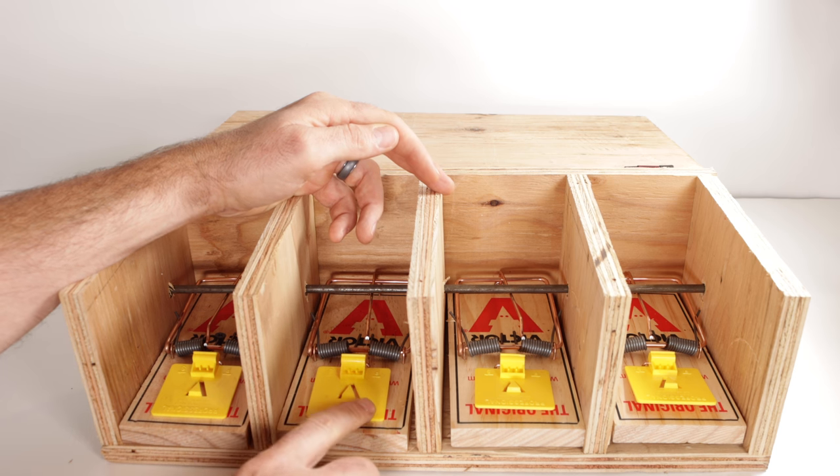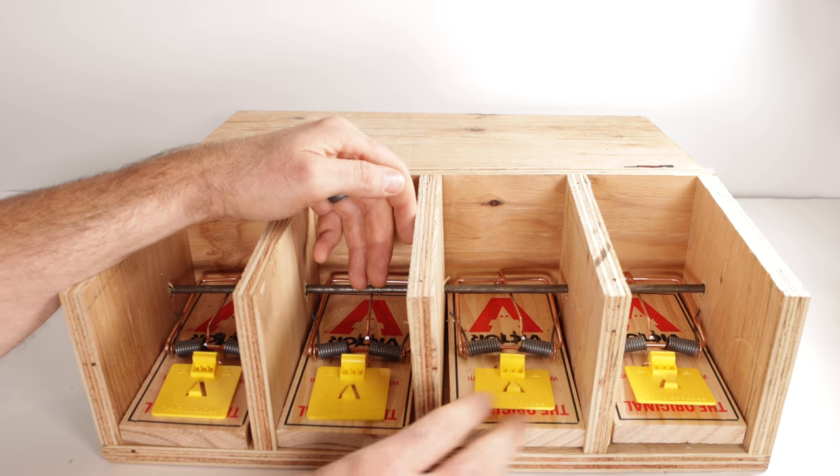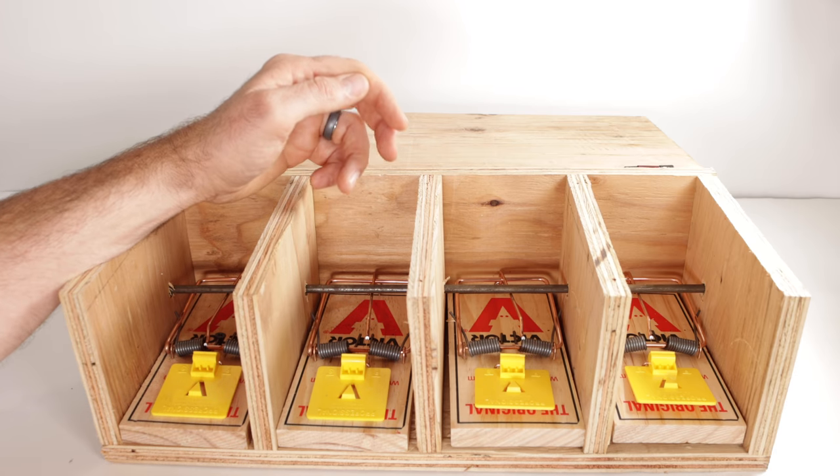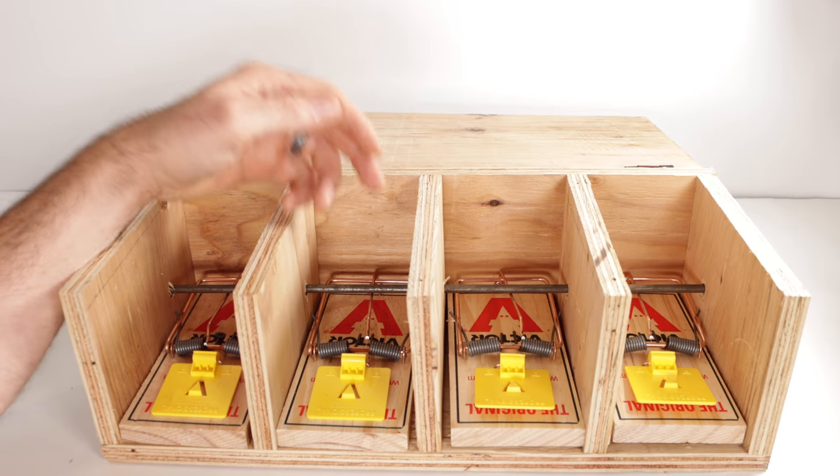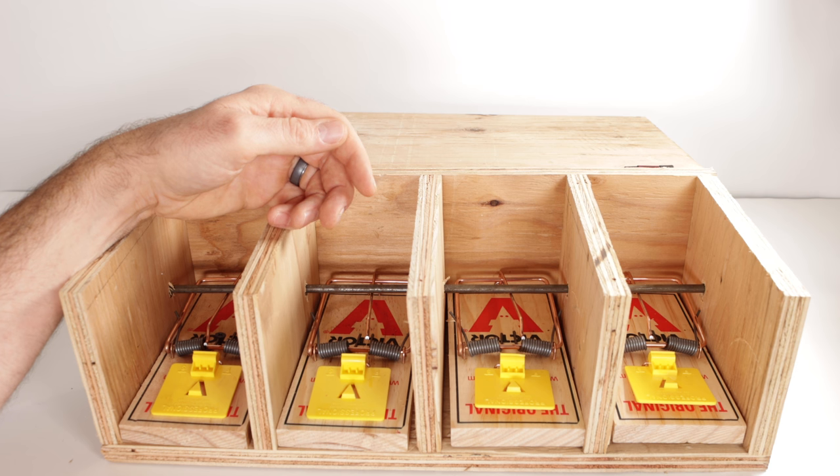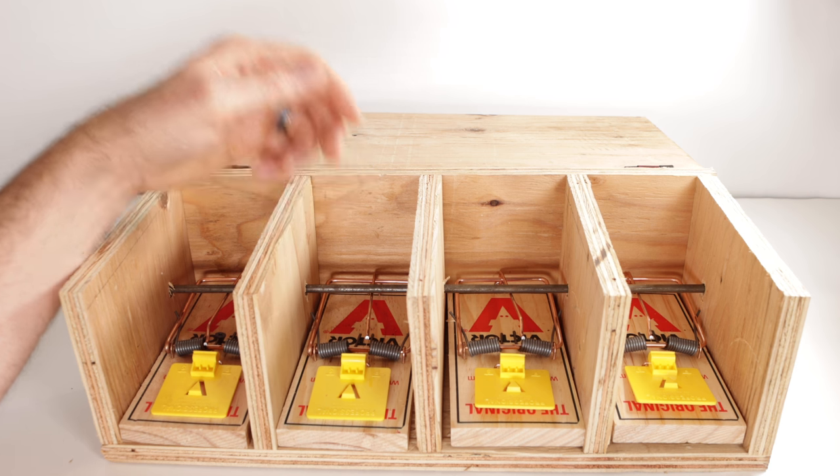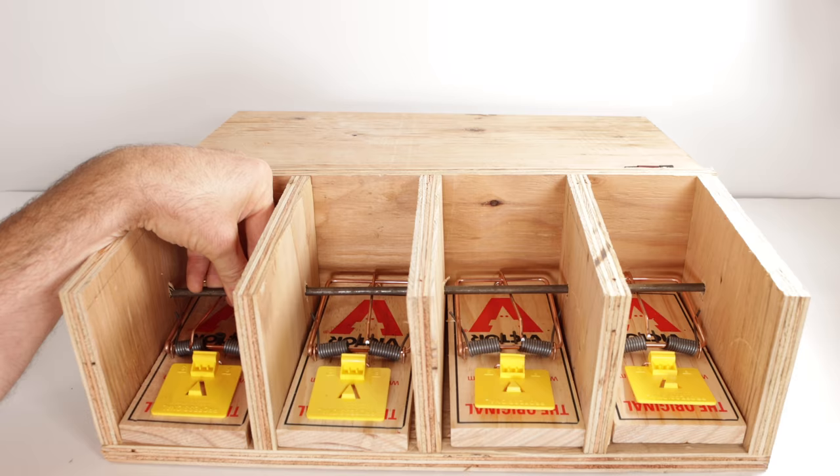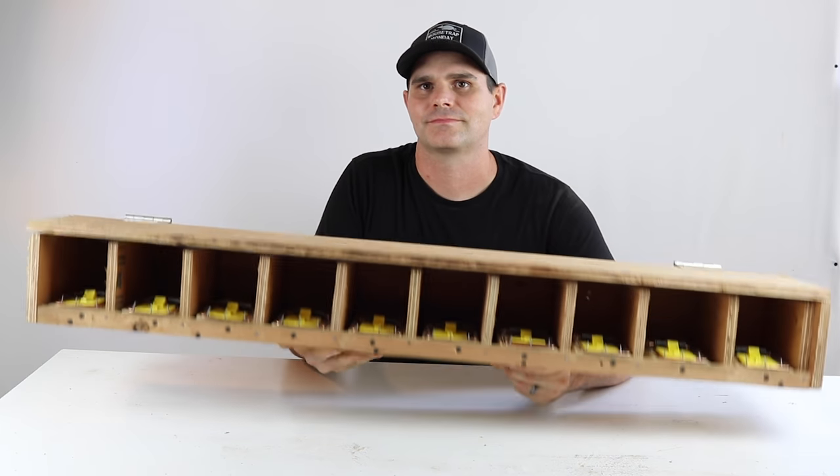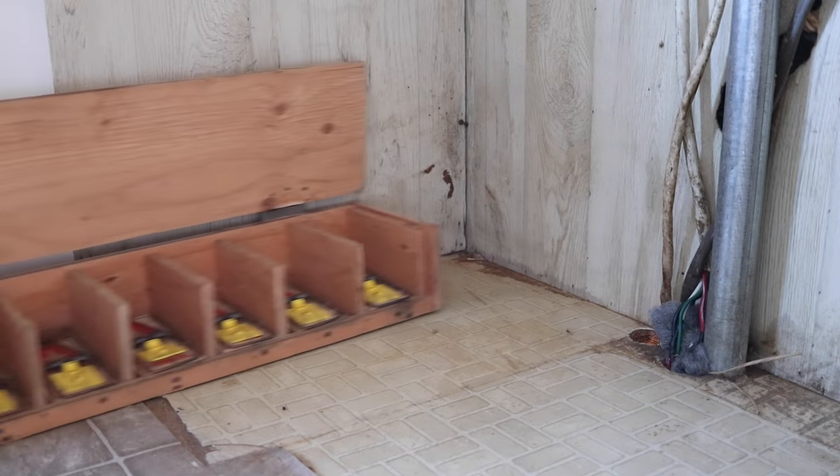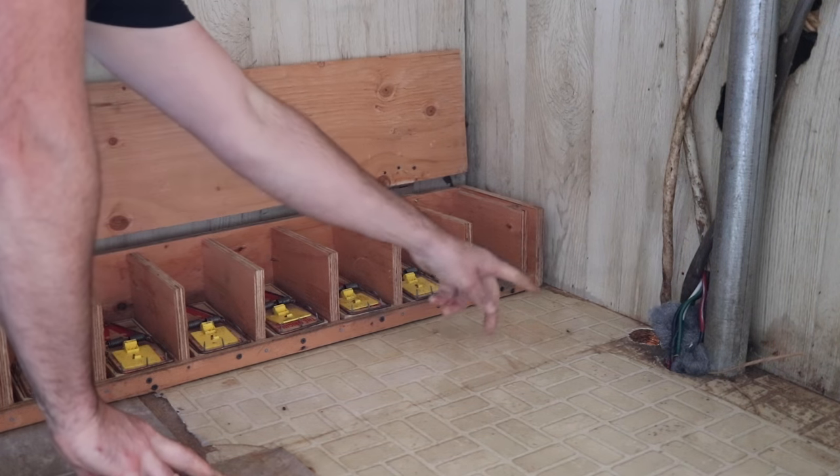The one problem is if you do catch a rat, the jolting might set off the other traps, but that's okay. I'd rather set too many traps and get every rat than not set enough. In fact, when friends and family call me with a rat problem, I don't bring my single or even this one that holds four. I made one of these systems that holds 10 traps. That way, I know I have enough traps to solve the problem the first time.